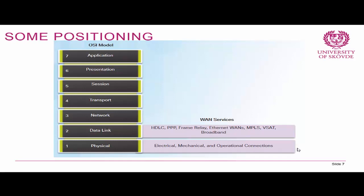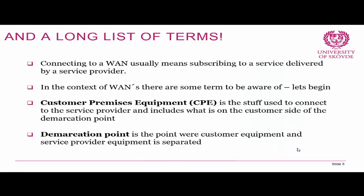Let's begin a long list of terms that Cisco wants us to be aware of for the CCNA 4 course. Connecting to a wide-area network usually means subscribing to a service delivered by a service provider. Starting from the customer point — the local organization where you and I are likely to work — we have the customer premises equipment, which is basically the equipment needed to connect to the service provider, and it includes what is on the customer side of the demarcation point. The demarcation point is basically where the customer equipment and the service provider equipment are separated.